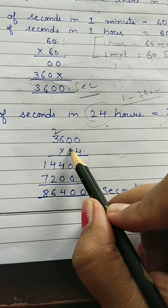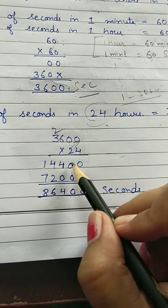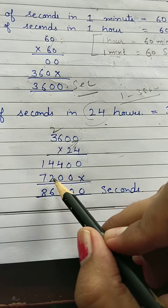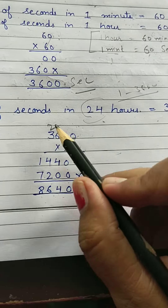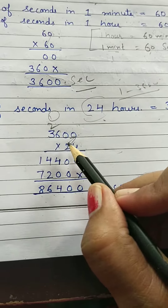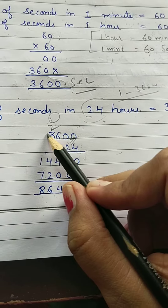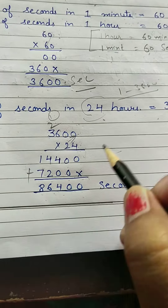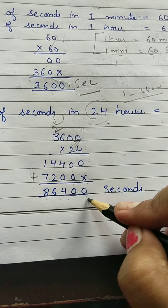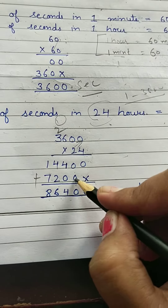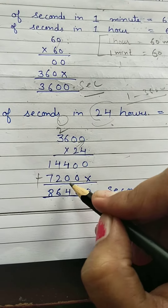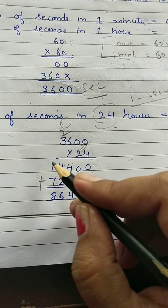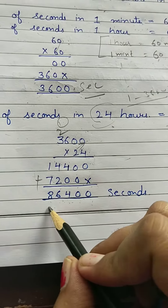The tens place step starts: 2 times 0 is 0, 2 times 0 is 0, 2 times 6 is 12 — write 2 and carry 1. 2 times 3 is 6, plus 1 is 7. Adding the partial products: 0, 0, 4, and 2 gives 6; 1 and 7 gives 8. The result is 86400.